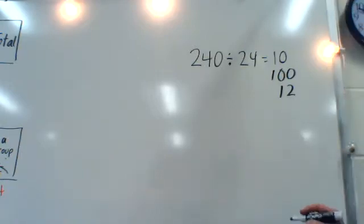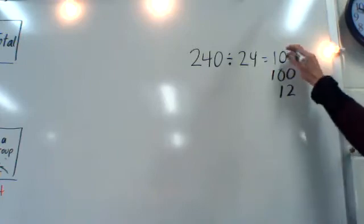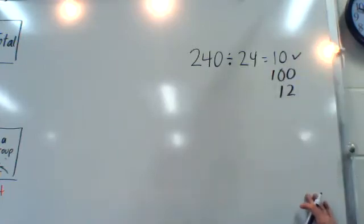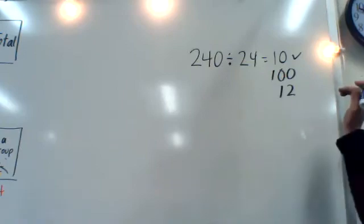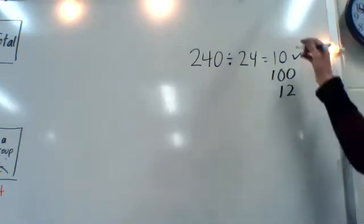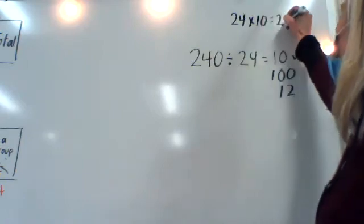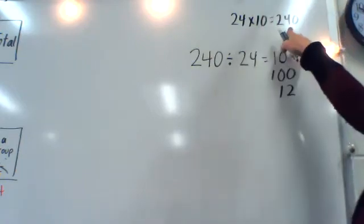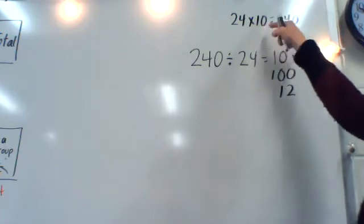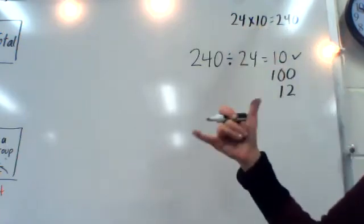Go ahead. So she thinks it's 10. I think that because I used my multiplication to help me, I think it's 24 times 10, and that equals 240, and that's why I mean it's 10. So she knew that if she had 240 as her dividend, she can make 10 groups of 24.